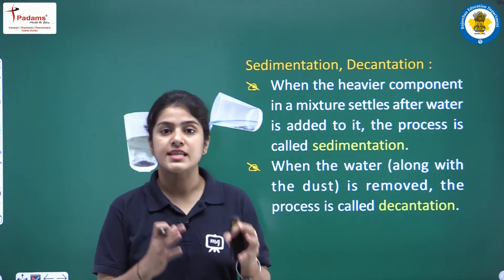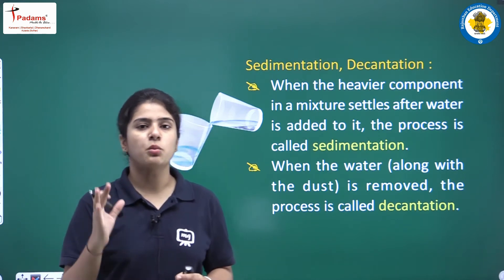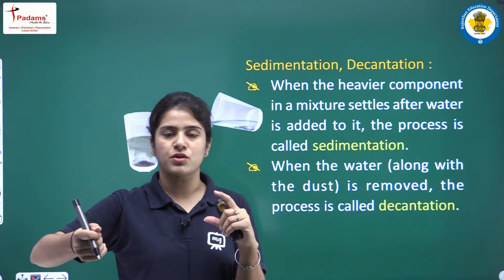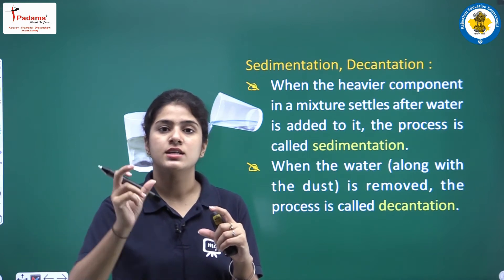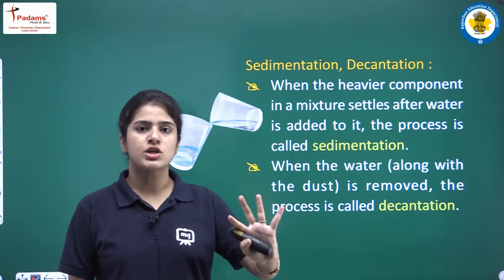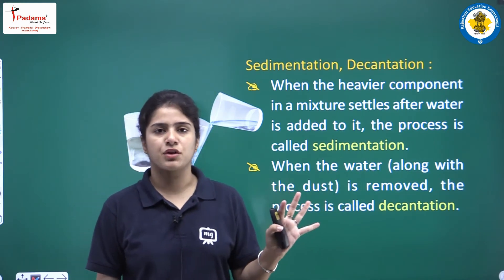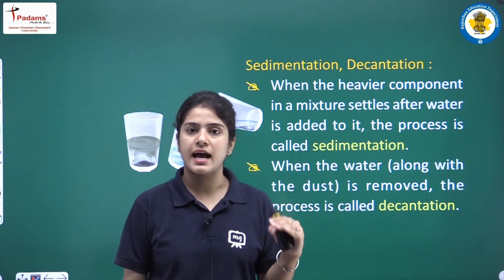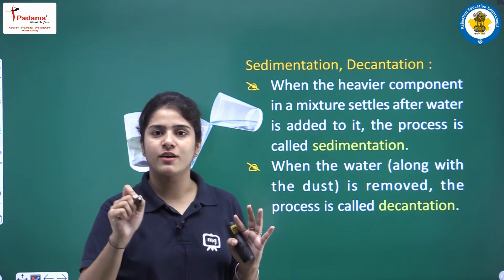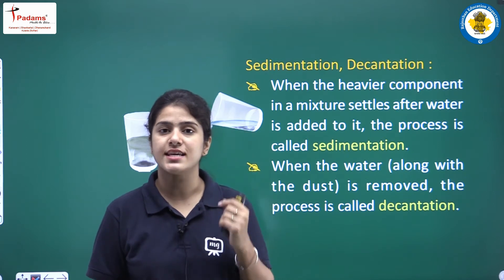The method is sedimentation and decantation. Let's assume an example. You have a glass of water and you put two to three spoons of sand in it. When you let it stand for a few minutes — say 15 to 20 minutes — you'll see that the sand has settled down completely and the water is forming the uppermost layer of the glass. The process in which the sand and water separate from each other is called sedimentation.